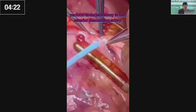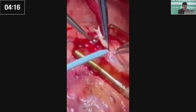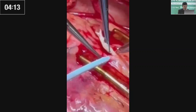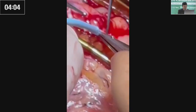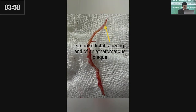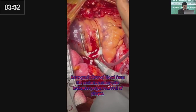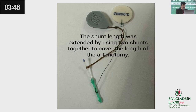We perform coronary endarterectomy by closed traction technique. The arteriotomy site was stabilized using an Octopus suction stabilizer. Arteriotomy was 8 to 12 mm in length. The atheromatous plaque was removed using ring forceps with gentle traction and gentle massage to the vessel wall; sometimes we use a snap hook. A small distal tapering end of the atheromatous plaque and retrograde flow of blood from the endarterectomy site indicate proper removal of the plaque. Sometimes we increase the length of the shunt by using two shunts together to cover the length of the arteriotomy.